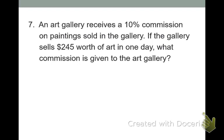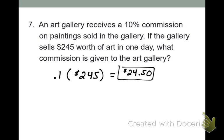An art gallery receives a 10% commission. So once again, it's kind of like what we talked about with the salesperson. They get this commission on paintings that are sold in their gallery. If the gallery sells $245 worth of art in one day, what commission is given to the art gallery? All you're going to do, if you remember, is you're going to take your percent, change it to a decimal, and multiply it by the total number of sales that they had. So what is my percent changed to a decimal? 0.1. 0.1. Multiply it times what? $245. And that's going to give me the total. When you do that, what's your answer? $24.50. $24.50 is the commission that the art gallery will get from that selling art in one day. Make sense?